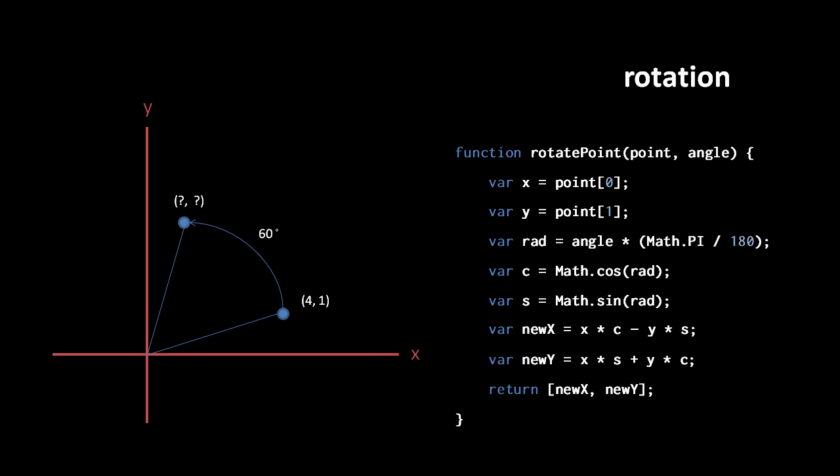Then, plugging the values into our formula, the new x equals x times c minus y times s, and the new y equals x times s plus y times c. Lastly, we return an array with the rotated coords of the new point.